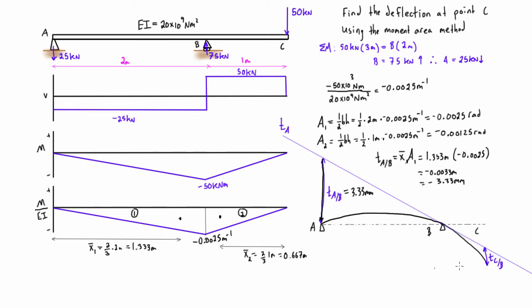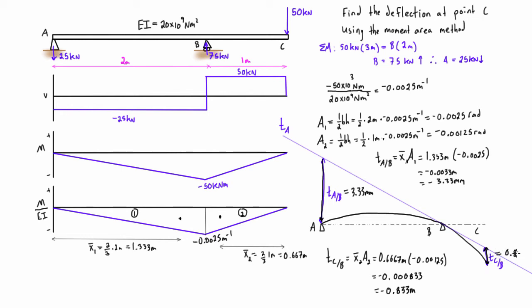Now let's calculate the tangential deviation of C with respect to B. That equals x̄2 times area 2: 0.667 meters times negative 0.00125 radians, which gives negative 0.000833 meters, or negative 0.833 millimeters. So TC with respect to B equals 0.833 millimeters.